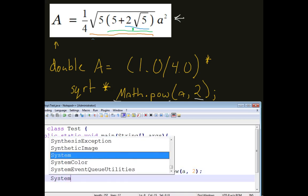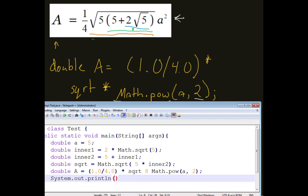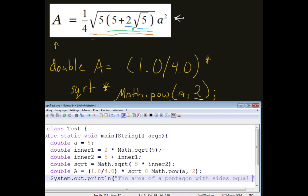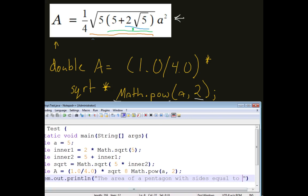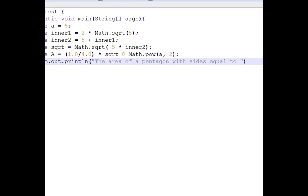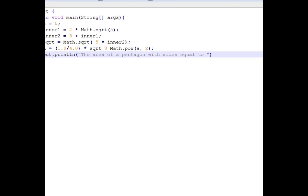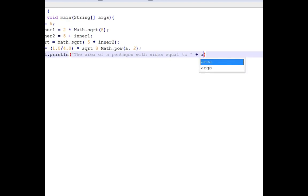And so, let's just take a look at this in action, system.out.println, the area of a pentagon with a side, with sides equal to, I just want to make sure everyone can see what we're doing here. With sides equal to, plus lower case A, is capital A, capital A.